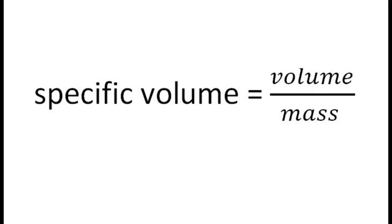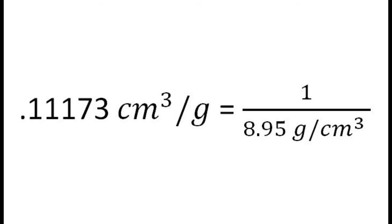Now if I wanted to find the specific volume — all that is, is volume over mass, or the reciprocal of the density. So if I take 1 over 8.95 grams per cubic centimeter, I get 0.11173 centimeters cubed per gram for specific volume.